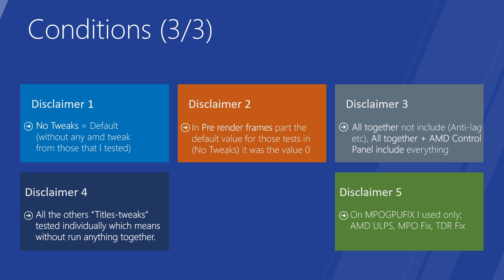Disclaimer 3: 'Altogether' does not include lag, etc. The 'Altogether' option, as you will see in the performance analysis, includes everything — the registry changes and the program changes. 'Altogether plus AMD control panel' includes all of that as well. Disclaimer 4: Each individual tweak title was tested individually, meaning without running anything else together. For instance, when you see 'pre-render frames 1,' it means I changed only that option, nothing else. And lastly, for MPOGPUFIX I used only MDU LPS, MPO fix, and TDR fix together, not individually — those specific settings for that program.